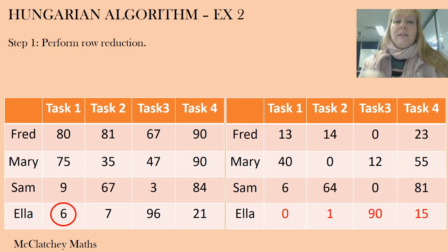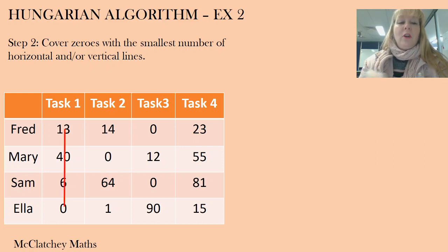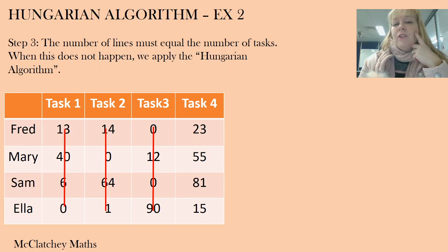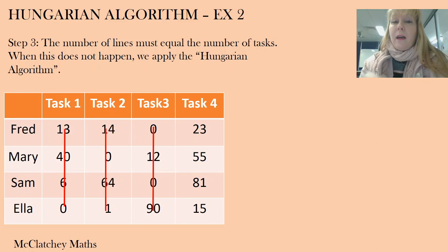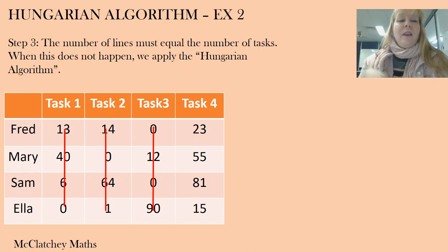Now we have a row-reduced matrix and we need to cover our zeros with the smallest number of horizontal and/or vertical lines. You might think to draw a line through each row since each row has a zero, but there is actually a smaller number of lines possible. I can pass three vertical lines through the zeros — but this is a problem. I need the number of lines to equal the number of tasks (four) to get the optimum allocation. Because we only have three lines, we're going to apply the Hungarian algorithm. Notice that in task 3's column there are two zeros, making it the best column to cover.